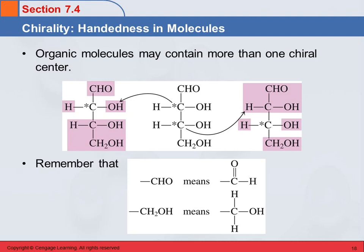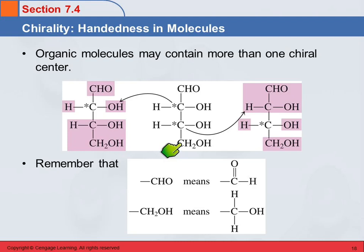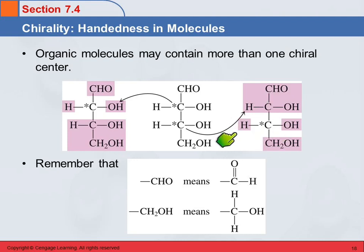Organic molecules can have more than one chiral center, and we'll see that carbohydrates have several of them. Looking at this molecule, this carbon has a hydroxyl group, a hydrogen, a carbonyl group, and an alcohol group. The groups highlighted in pink attached to that carbon are all different. If we look at the second carbon, it also has four different groups attached to it. So each of those carbons is chiral.